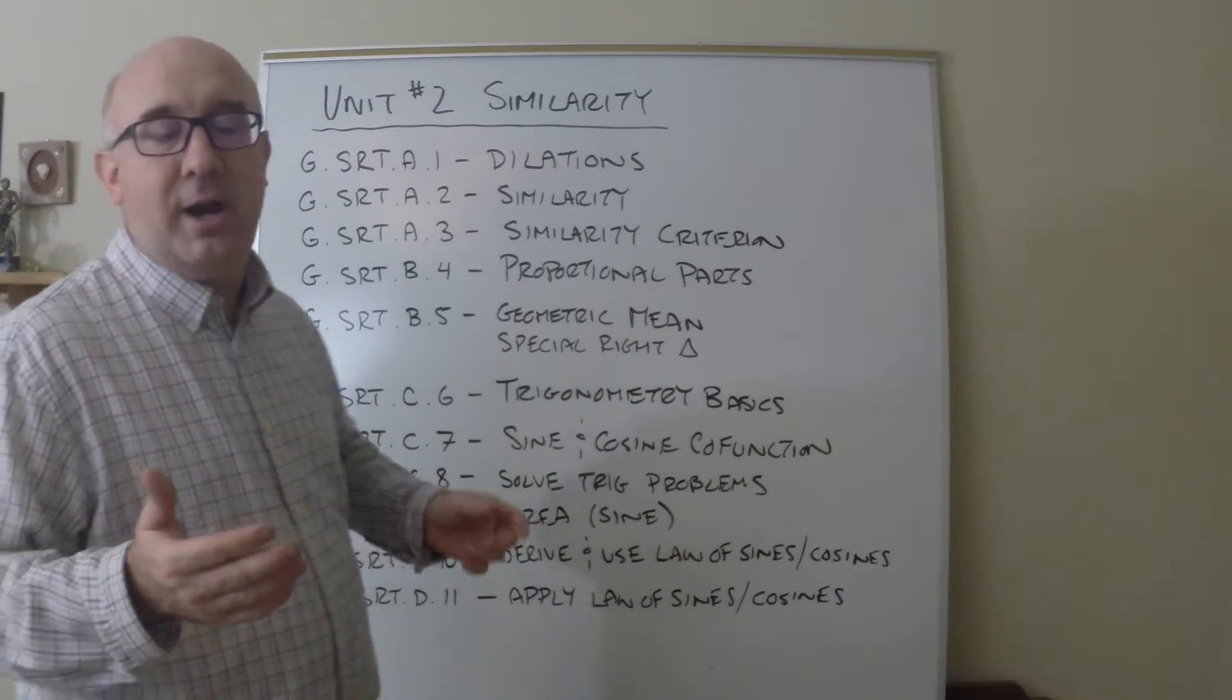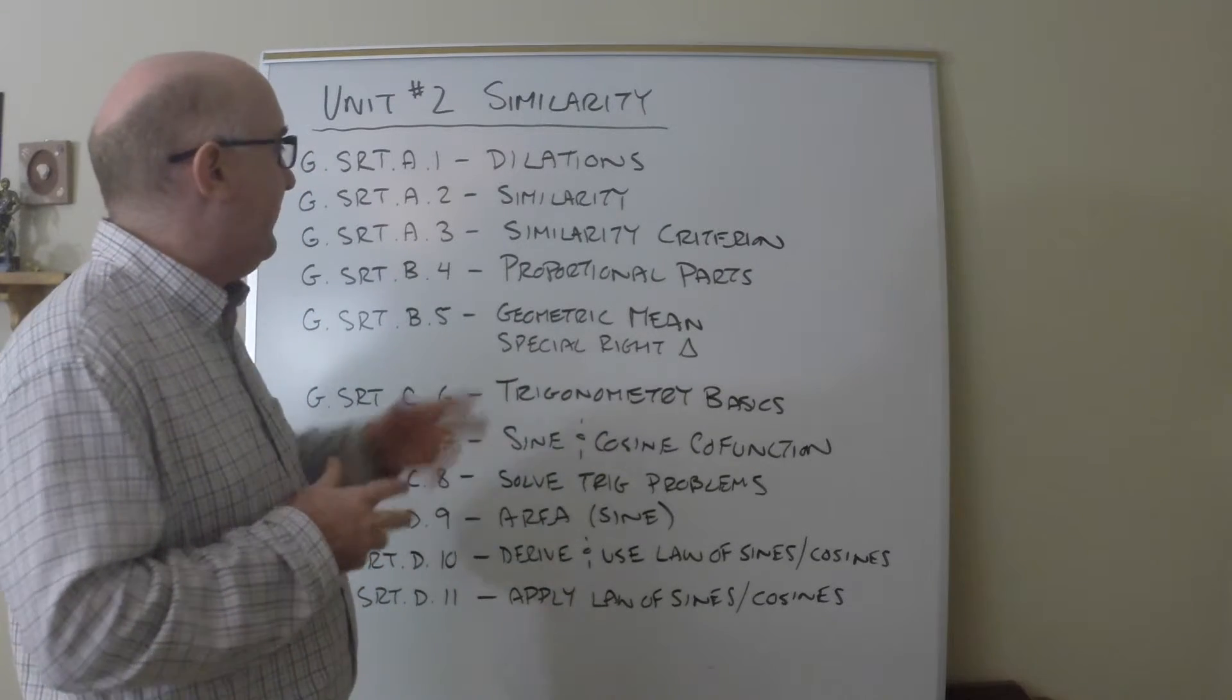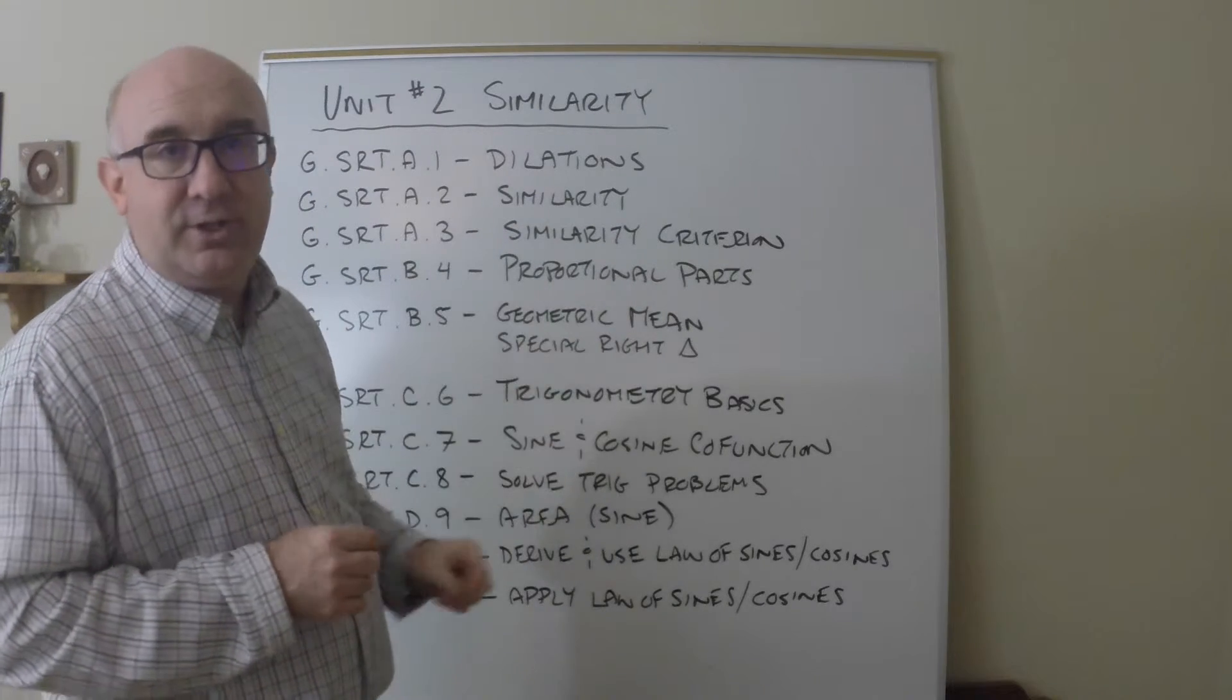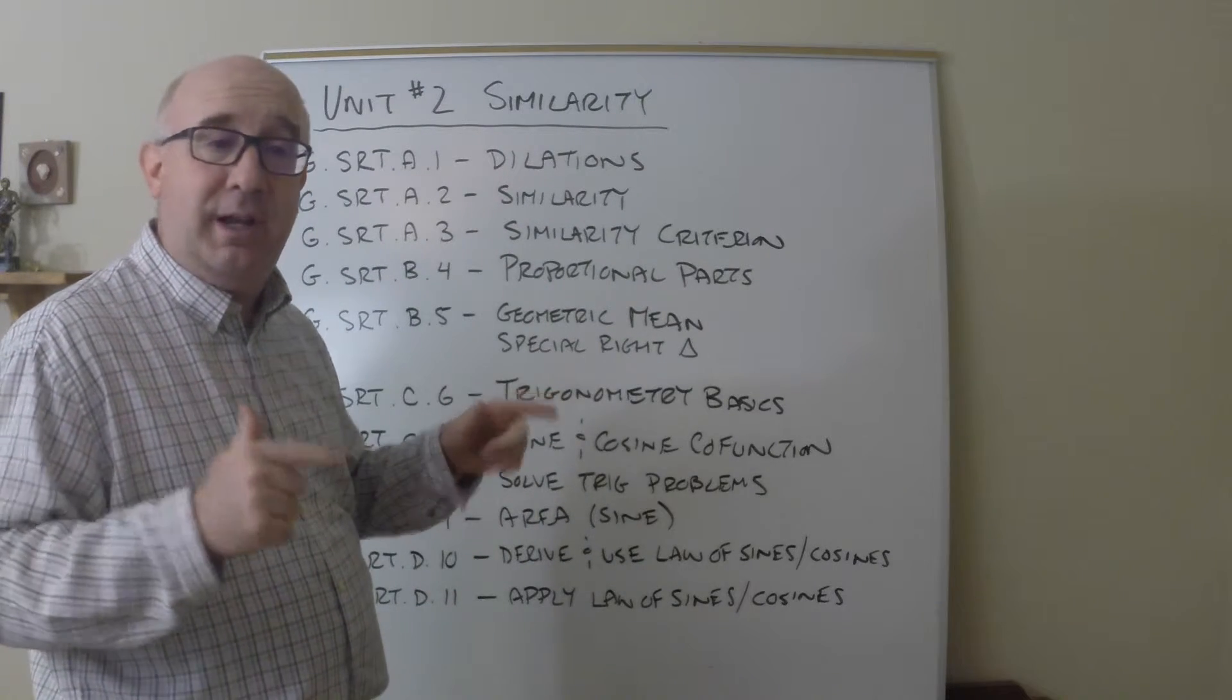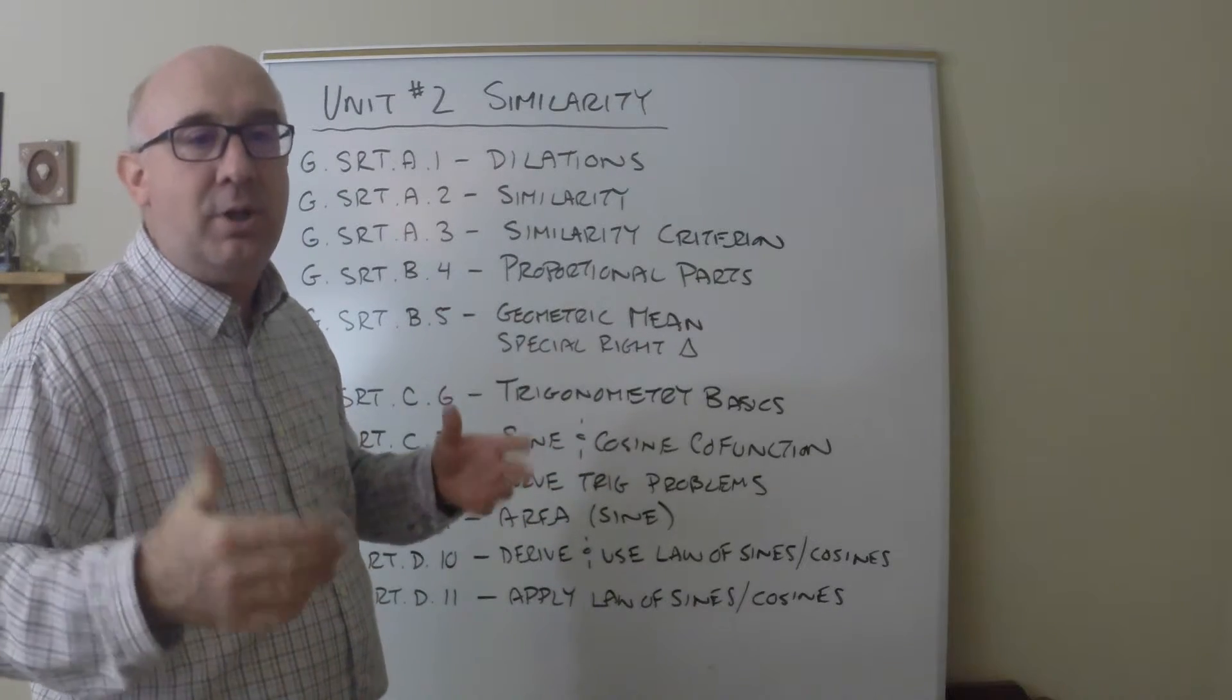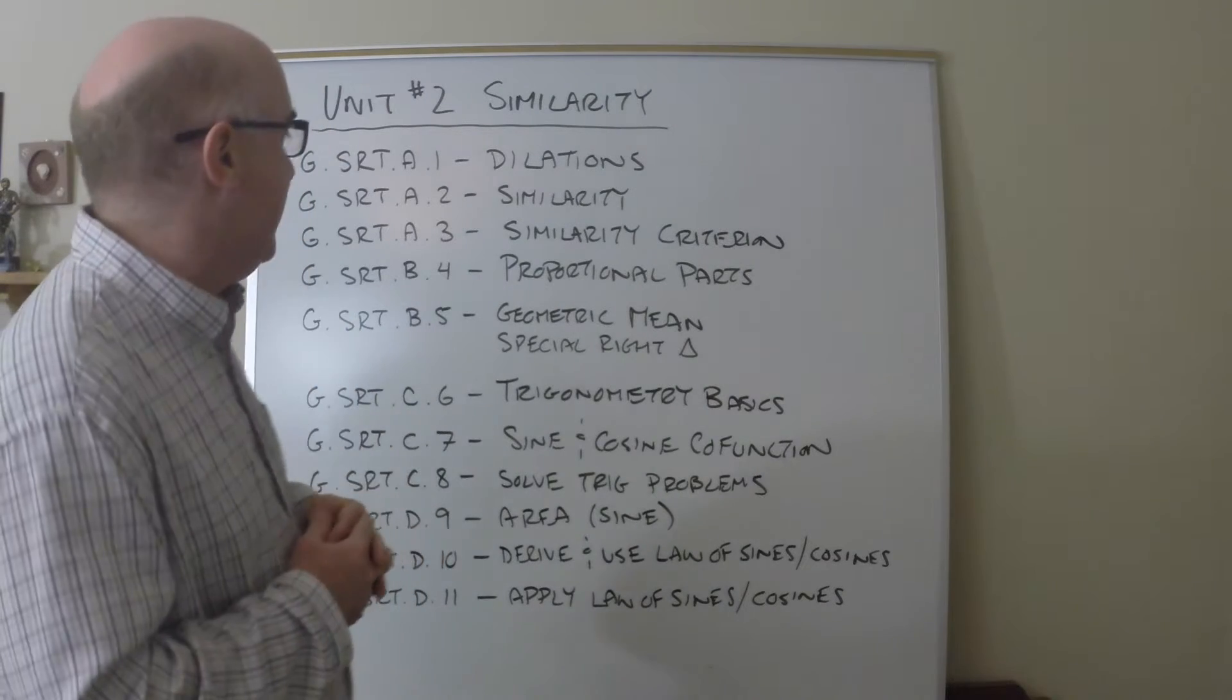Then we move to the standard criteria of AA, SAS, SSS proportionality from a transformational point of view. Our definition of similarity is: they're similar if one can map onto the other using a single or series of similarity transformations.